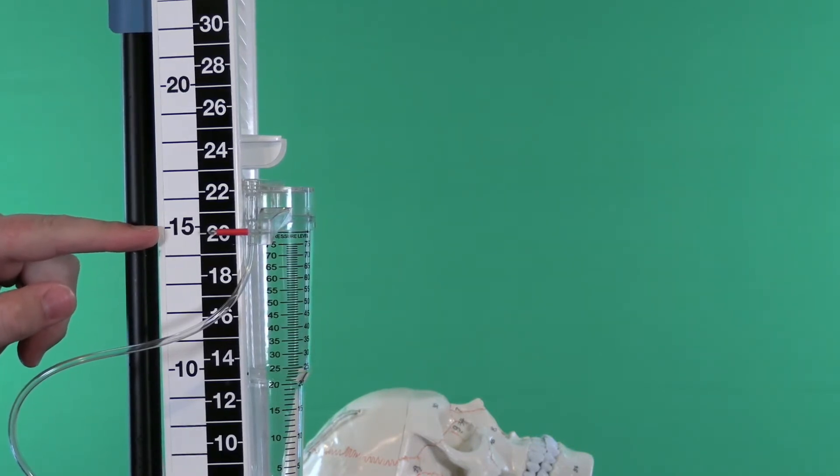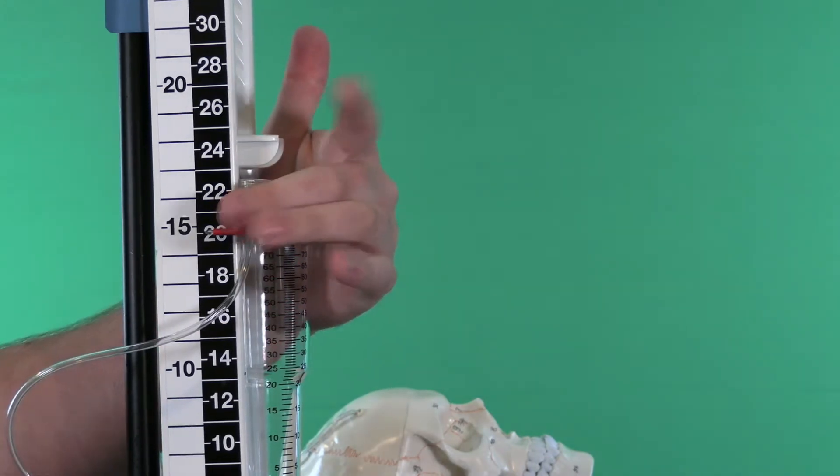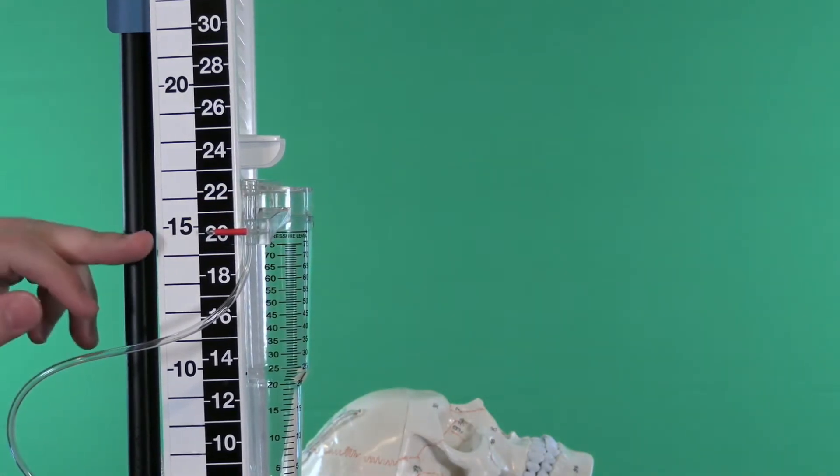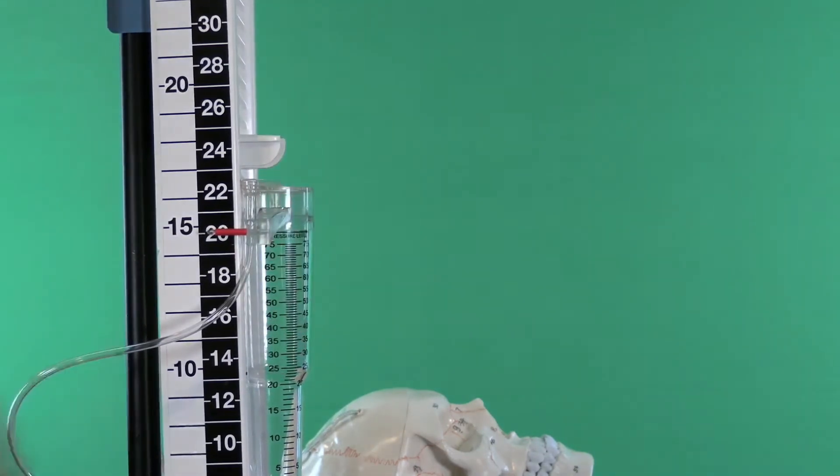The neuro intensivist may give you that number in centimeters of water, so just make sure you know that there's a difference between the millimeters of mercury and the centimeters of water of pressure.